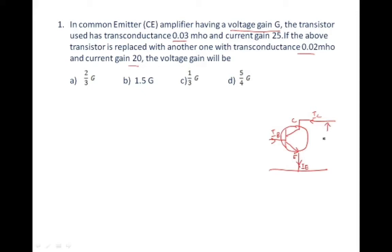The output voltage is given as Vce — the voltage across the collector-emitter region — and the input voltage is given as Vbe. The input voltage Vbe equals delta-ib times ri, where ri is the input resistance and ro is the output resistance.